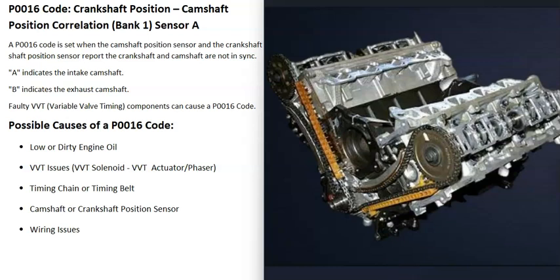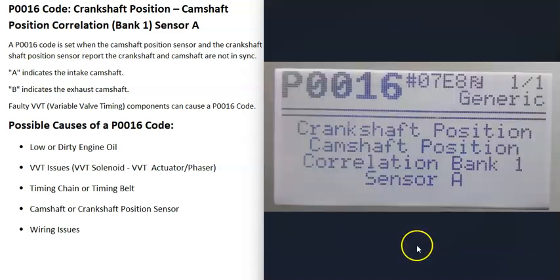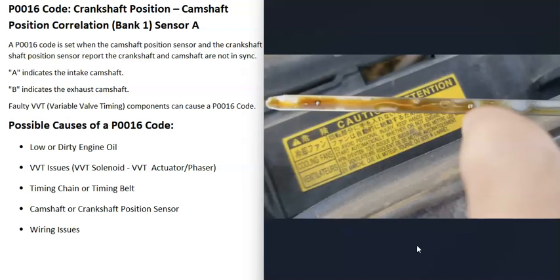If your engine is a single overhead cam engine, it will only have one camshaft. If it's a dual overhead cam engine, it will have two camshafts on each bank — the A camshaft is on the intake side and the B camshaft is on the exhaust side. Locate the bank one side of your engine, which is the side with the number one cylinder, and sensor A is on the intake side.